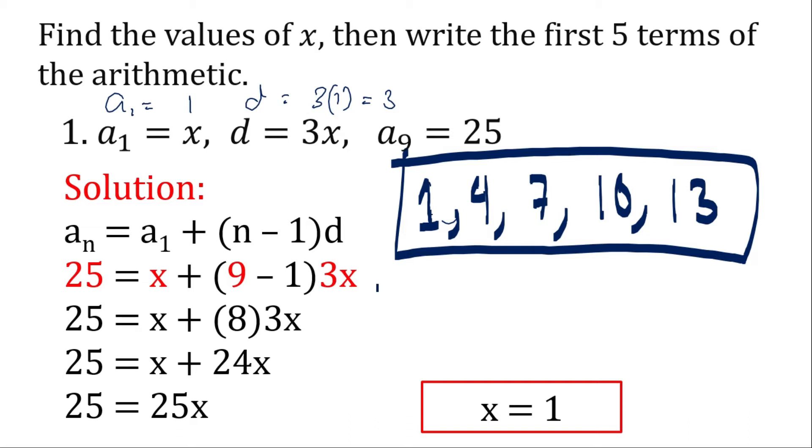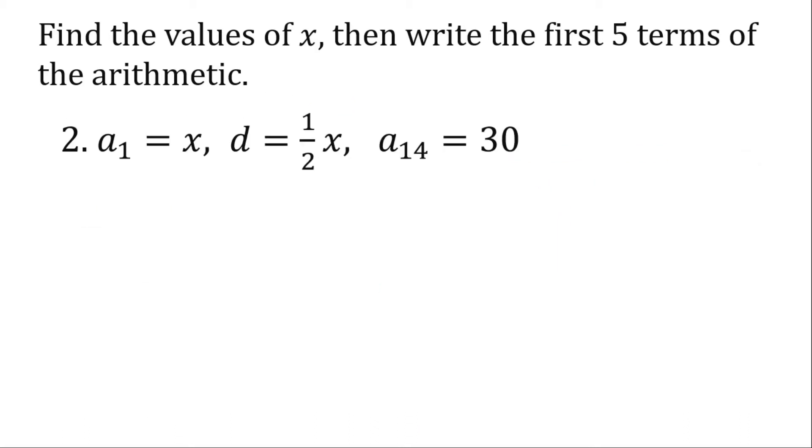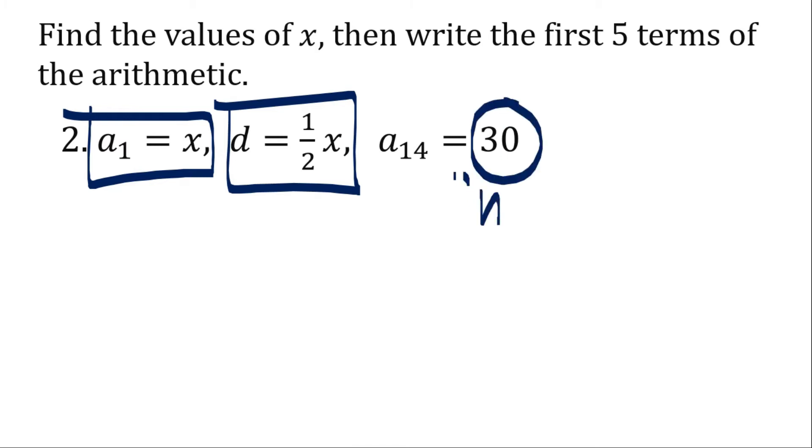Now let's go to question number 2. The value of our a sub 1 is x, our common difference is 1 and a half x, our a sub n is 30, and the value of our n is 14. Now using all those values, let's use it in answering arithmetic sequence. Let's plug that out in our arithmetic sequence formula.